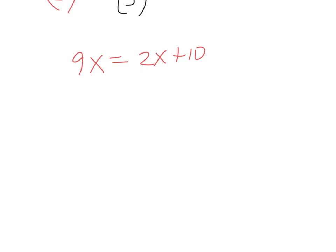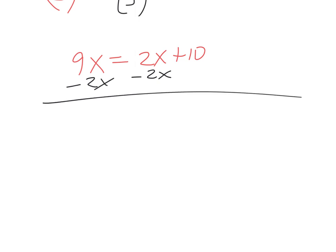We're trying to get the x alone. What do we do? Minus 2x from both sides. And then 7x equals 10. Divide by 7 — ten-sevenths.